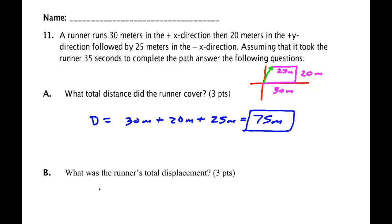What was the runner's displacement? Delta R is the sum of 30 meters plus a minus 25 meters i hat plus 20 meters j hat. So delta R is 5 meters i hat plus 20 meters j hat.